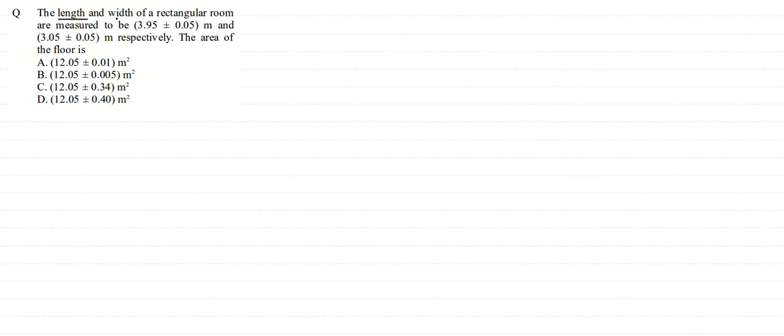Alright friends, in this question we are given the length and width of a rectangular room are measured to be 3.95 plus minus 0.05 meter and 3.05 plus minus 0.05 meter respectively. The area of the floor is, it's a direct error analysis based question.